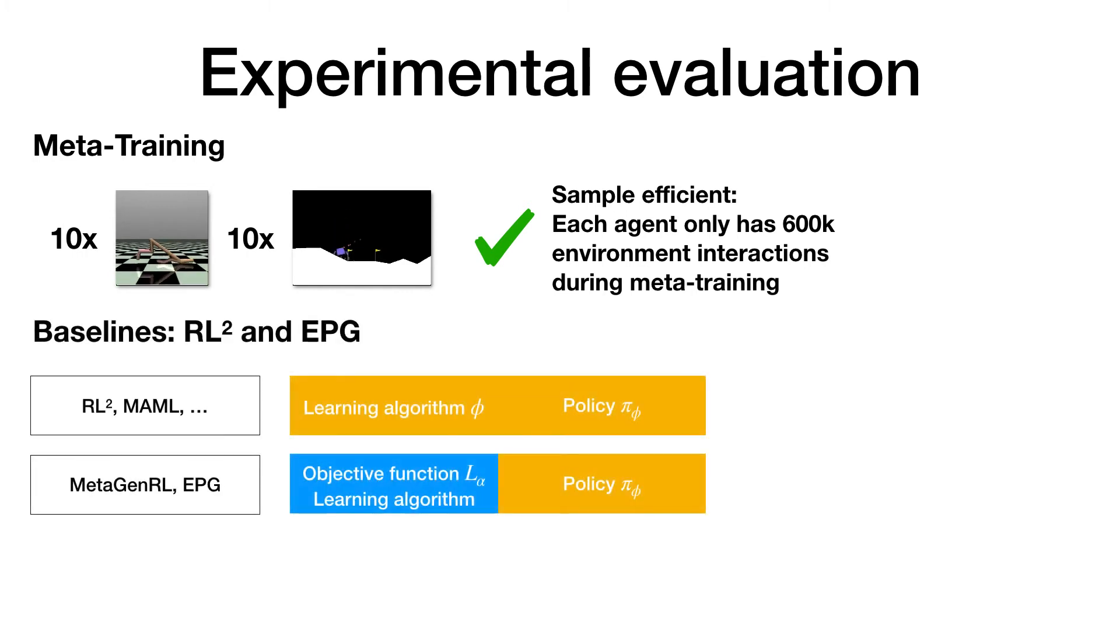We compare it to two baselines, RL² and EPG. Compared to RL², we expect meta-general to perform better in terms of generalization because it separates the policy and the learning algorithm. This prevents hard-coding specific information about the environment directly during meta-training. Compared to EPG, which also has such a separation, we expect to be much more sample efficient due to our agent population and off-policy data.